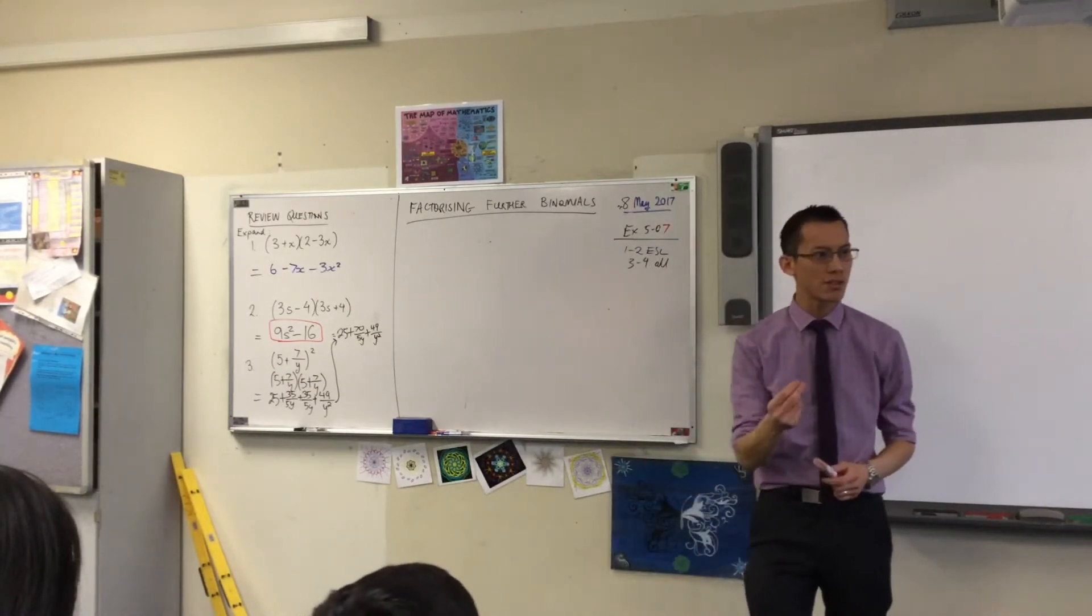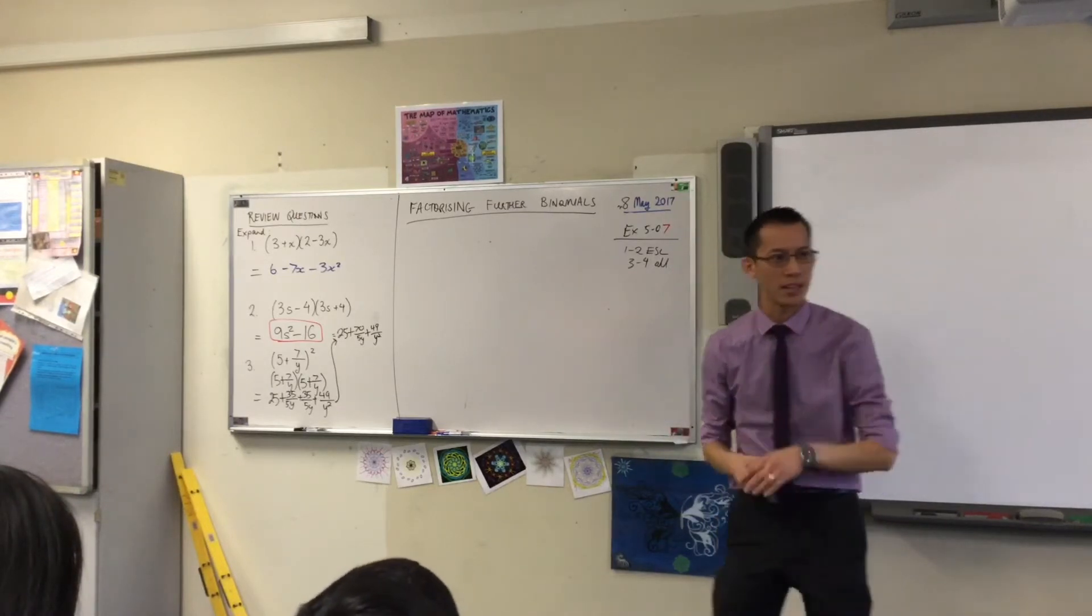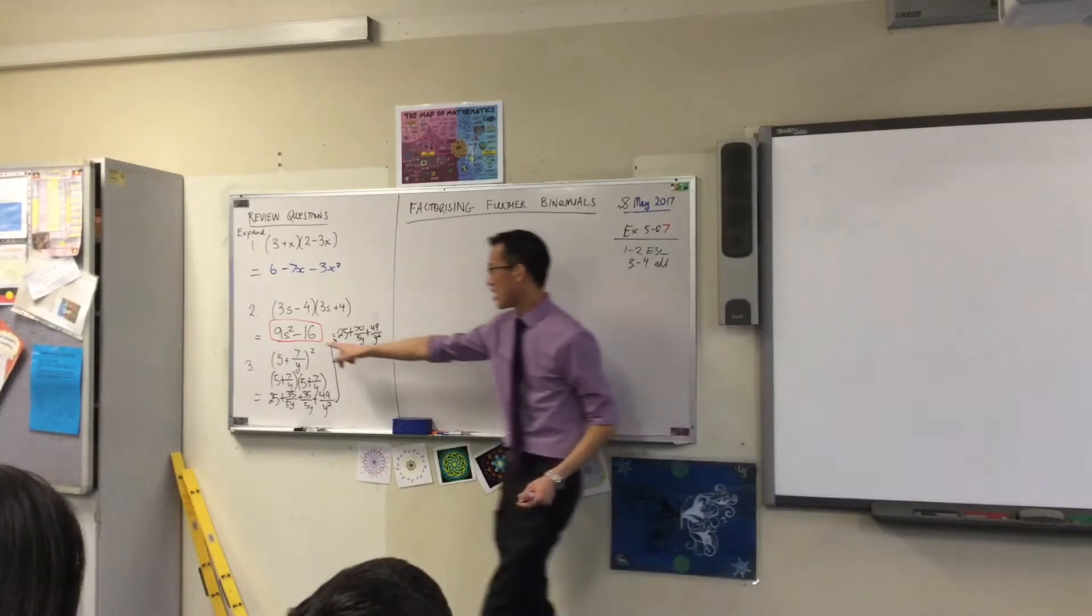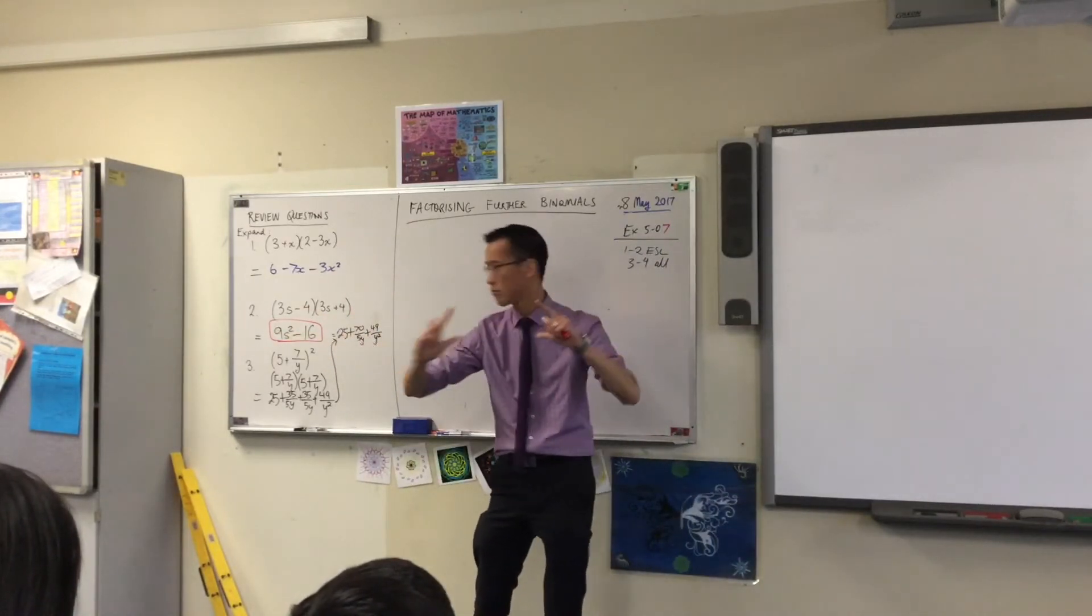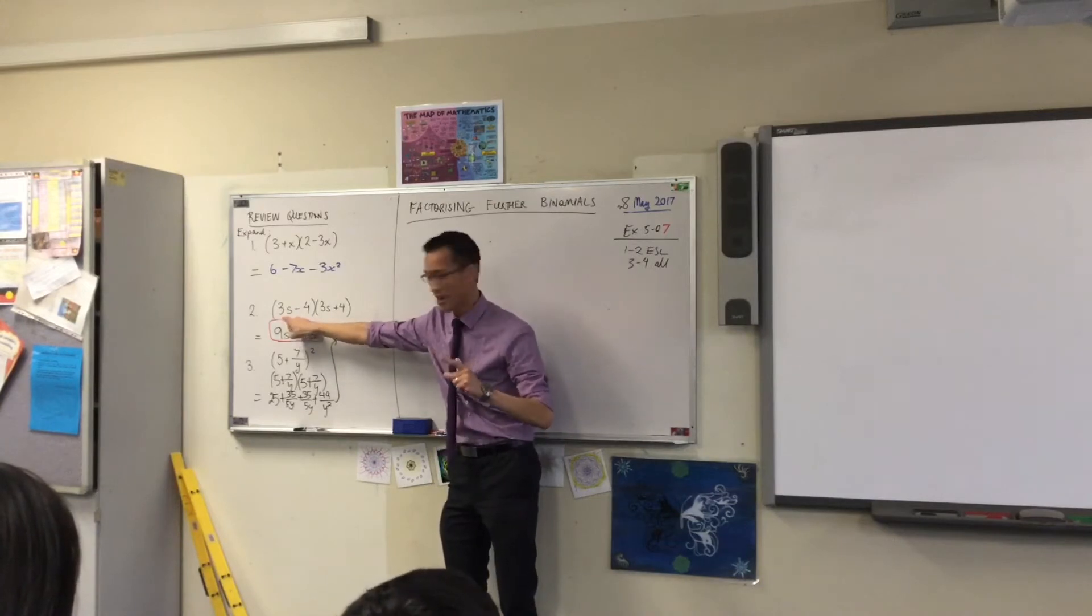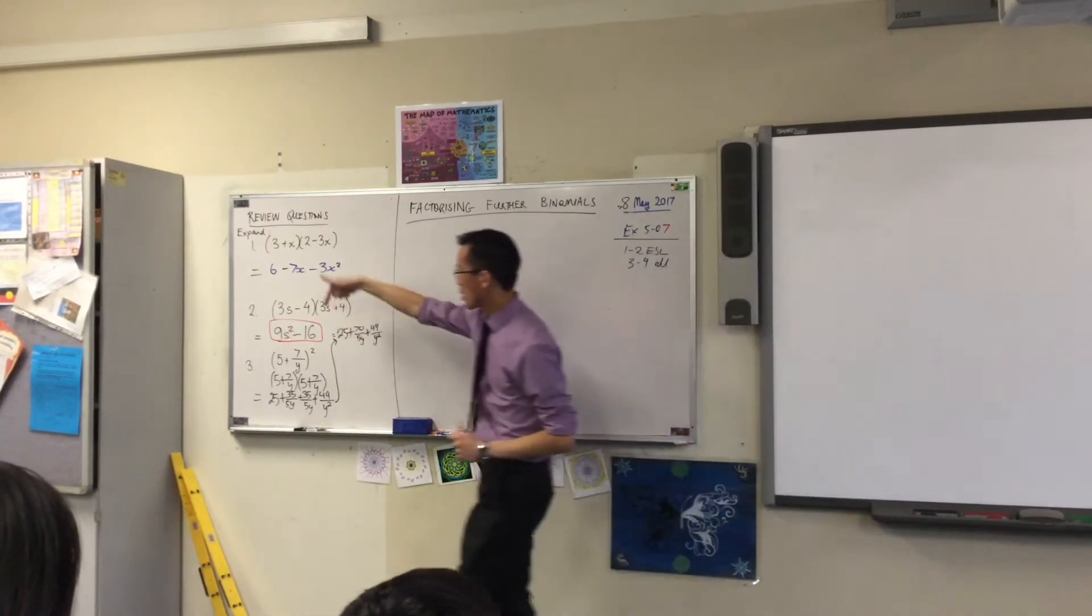What knowledge can you use to just go straight there and not do all of the inside, outside, whatever? Yeah, Isabella? Okay, you can see 9s squared is the square of 3s, and 16 is the square of 4. So you've got your pieces here.